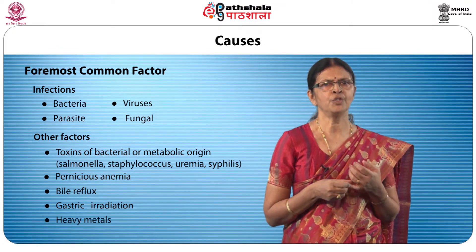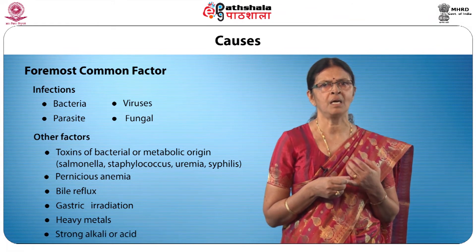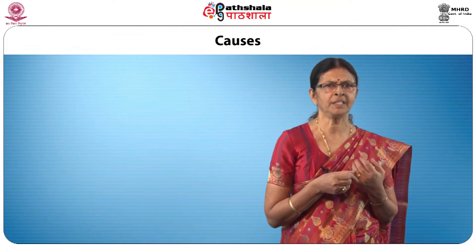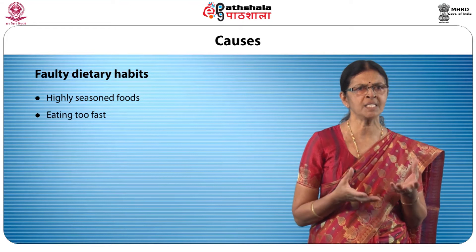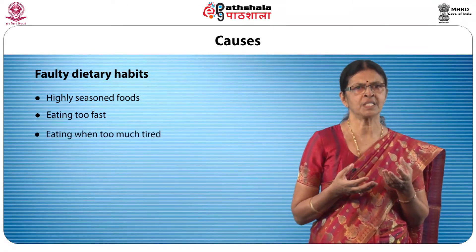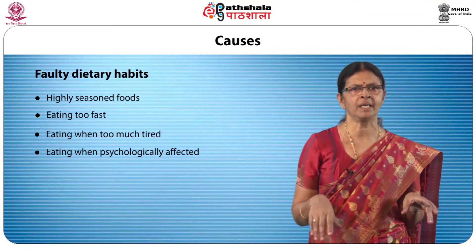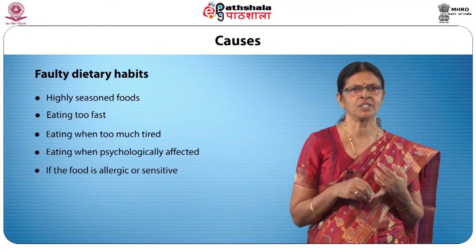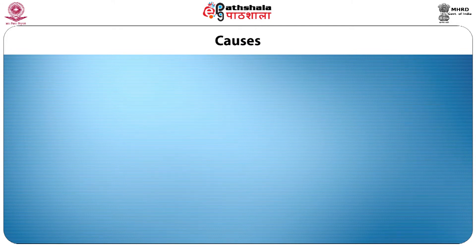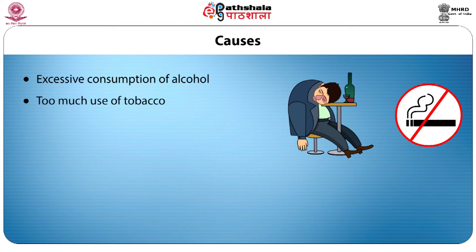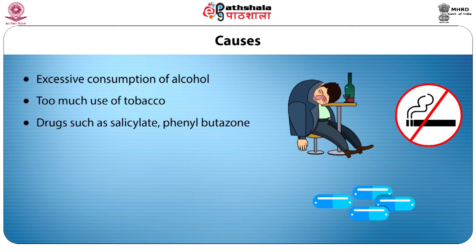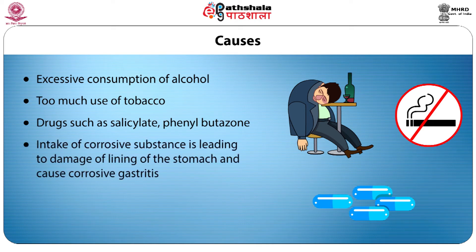Faulty dietary habits such as taking highly seasoned foods, eating too fast, eating when too tired, eating when psychologically affected, and consuming foods that are allergic or sensitizing also contribute. Excessive consumption of alcohol, too much use of tobacco, and drugs such as salicylate and phenylbutazine, as well as intake of corrosive substances, damage the lining of the stomach and cause corrosive gastritis.